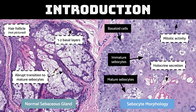Sebaceous tumors look like sebaceous lobules to varying degrees, the main distinction being the amount of basaloid cells. There is also often a gradual transition from the peripheral basaloid cells into the central mature sebocytes, the intermediate form being immature sebocytes. These cells are smaller than their mature counterpart, with a larger nucleus and amphiphilic cytoplasm with few vacuoles.